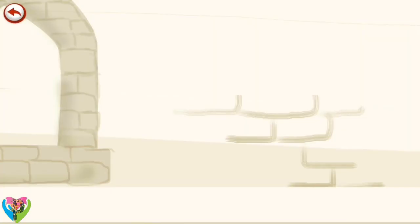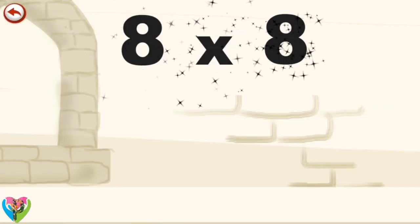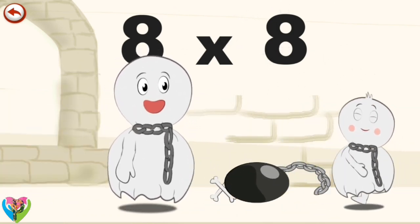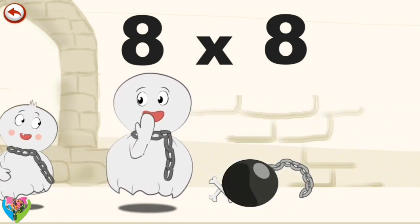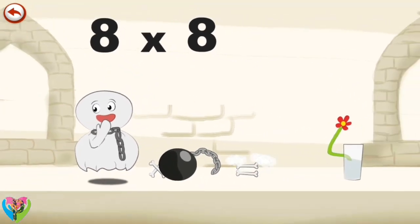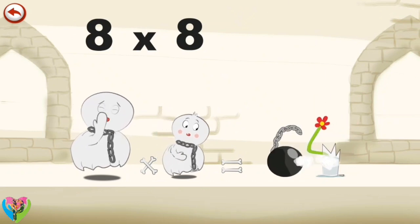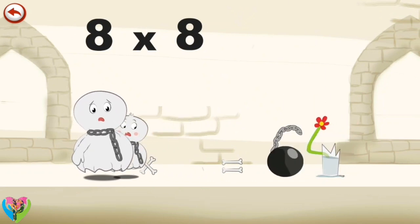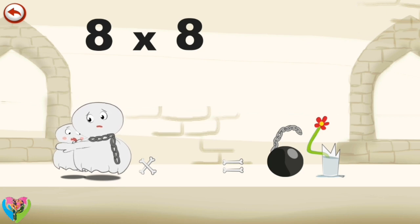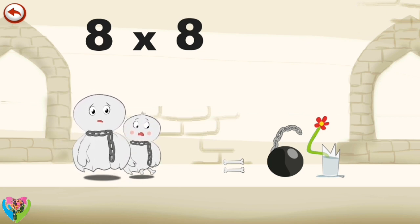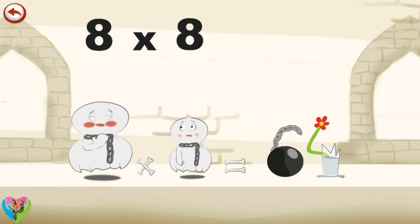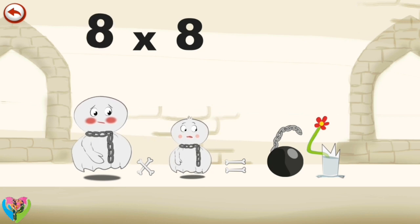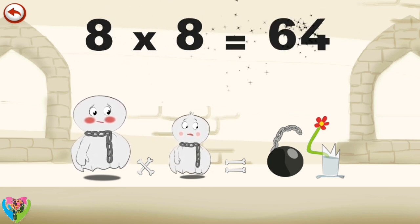What's the story of 8 times 8? Daddy Spooky 8 and little Spooky 8 love playing football. Daddy Spooky 8 encourages little Spooky 8 who kicks his ball — whoops! The ball and chain land in the shape of a 6, right on mummy's beautiful vase which smashes in the shape of a 4. 8 times 8 is 64.